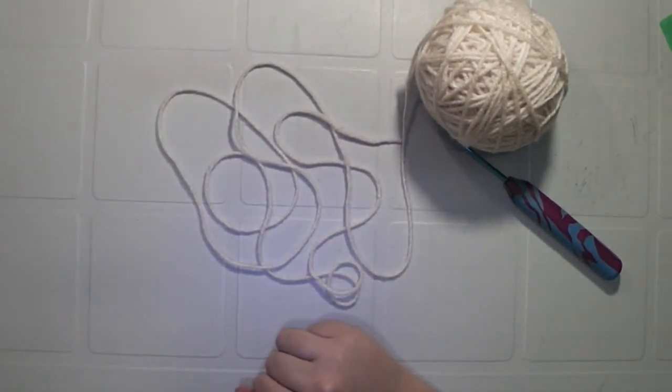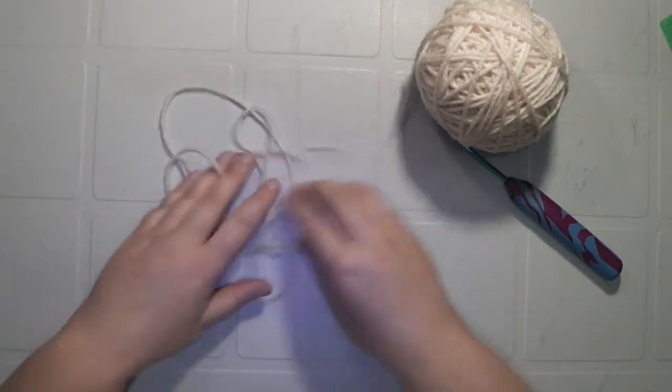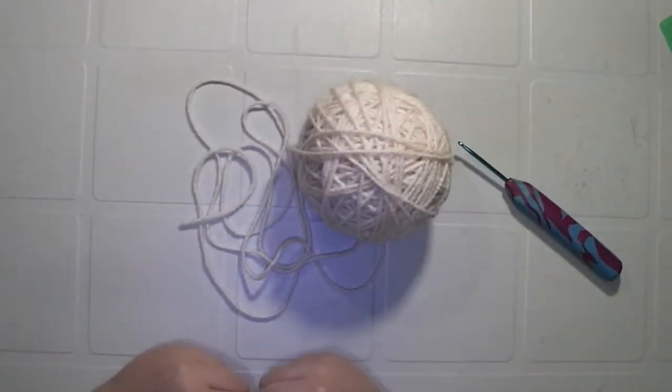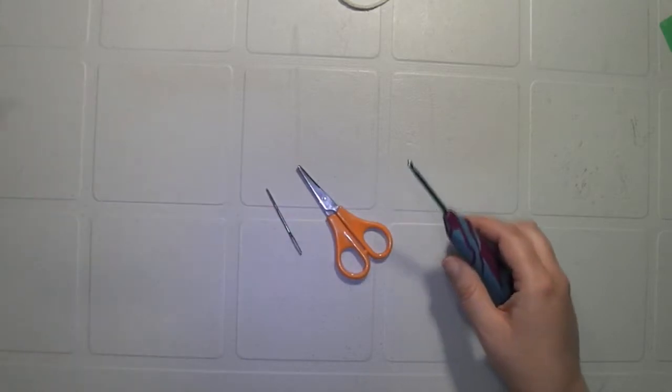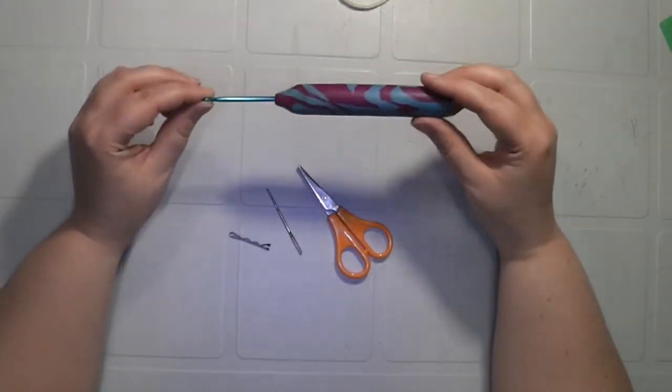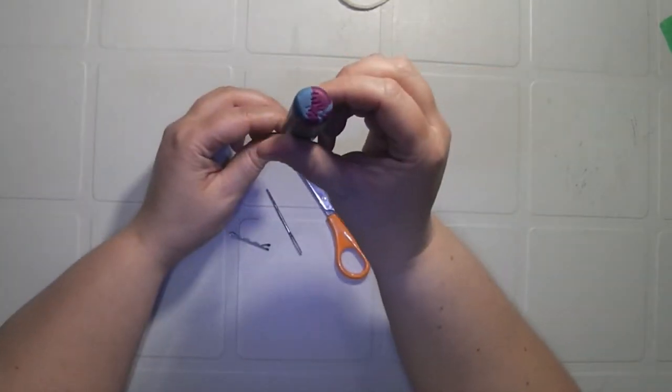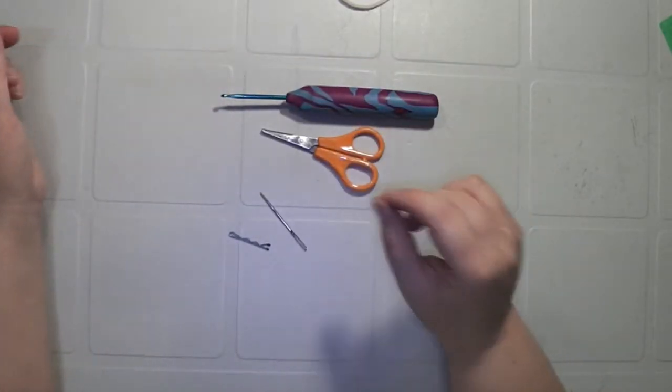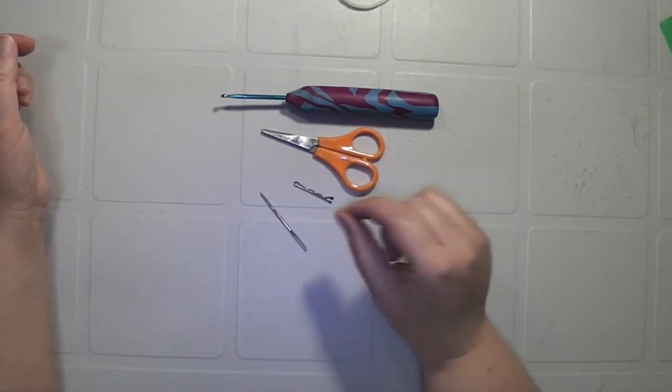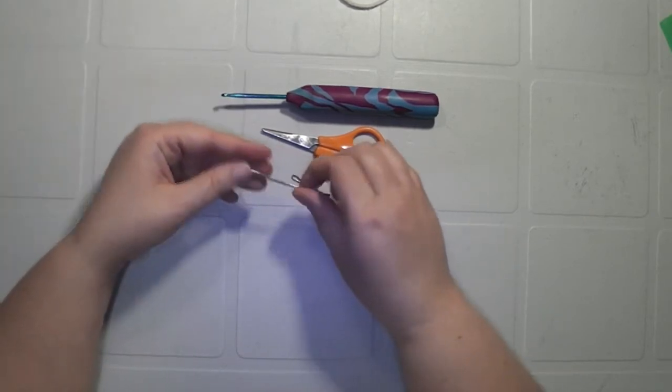Like I said, I use Red Heart Comfort black yarn or whatever worsted weight black yarn that you use. The supplies that you will need for this tutorial is a crochet hook letter E or 3.5, scissors, a stitch marker (I use a bobby pin), and a yarn needle.